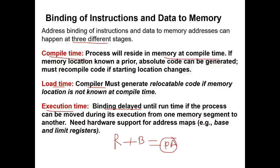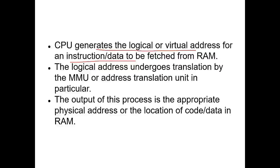At execution time, binding is delayed until runtime — if the process can be moved during execution from one memory segment to another. For example, if you are on a flight sitting beside an old lady and someone asks you to exchange seats, you exchange based on the current situation. This is execution time — memory is allocated or exchanged at runtime based on the current situation wherever space is available. The CPU generates a logical or virtual address, which is then translated by the memory management unit to the appropriate physical address in RAM.